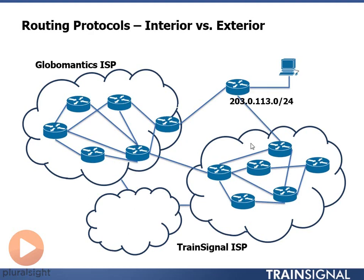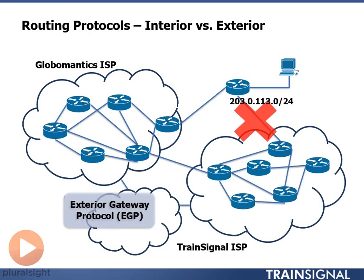We need an Exterior Gateway Protocol to kick in and move that route from the TrainSignal ISP over to the GlobalMantics ISP. We use an Exterior Gateway Protocol — namely Border Gateway Protocol or BGP — in order to let the TrainSignal ISP and the GlobalMantics ISP and the rest of the public internet communicate with each other. This allows that network address to be routed through the GlobalMantics ISP instead.